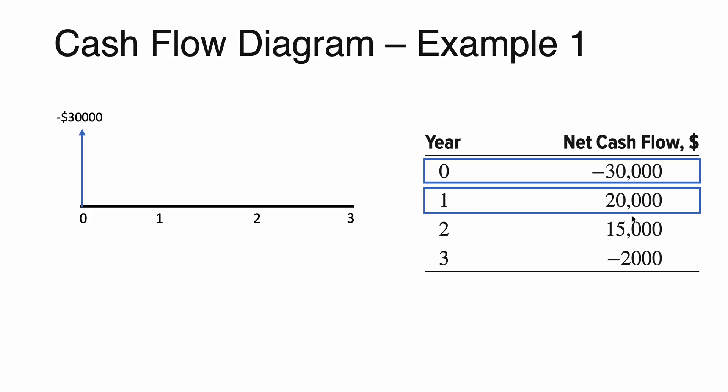In year 1, we have a positive net cash flow of $20,000, which indicates that money is being earned. To represent that in the cash flow diagram, we draw an arrow that points inwards, indicating that money is going into the system. In year 2, we have a positive net cash flow of $15,000, so again, we draw an arrow that points inwards.